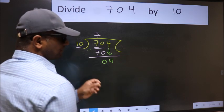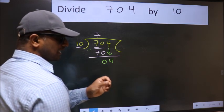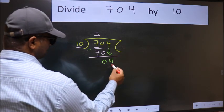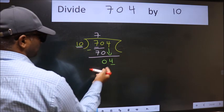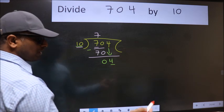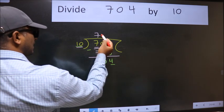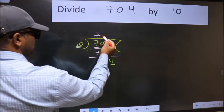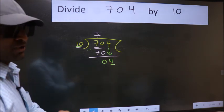After this step the mistake happens and the mistake is this. Here we have 4 and here 10. 4 is smaller than 10. So what many do is they directly put dot, take 0, which is wrong.